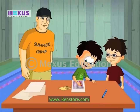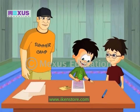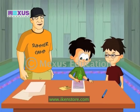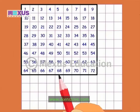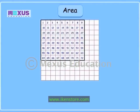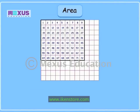One, two, three, four... This will take ages to count. Just let me know when you are done. Finally done — seventy-two squares. This postcard completely covers up seventy-two of these squares. Can you tell me what this means? That the area of this postcard is seventy-two squares.